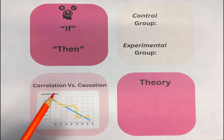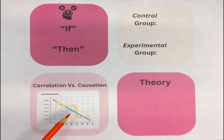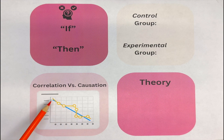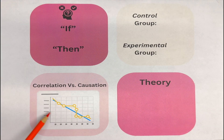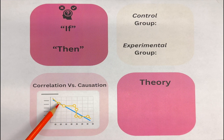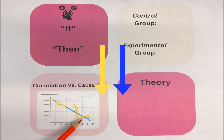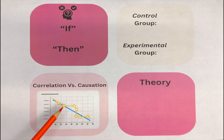Now let's talk about correlation versus causation. A good way to visualize this is to look at a graph with two variables — a solid blue line and a dotted yellow line. When both lines go in the same direction, both increasing or both decreasing at the same time, that is correlation.